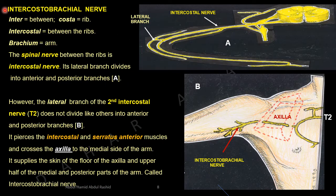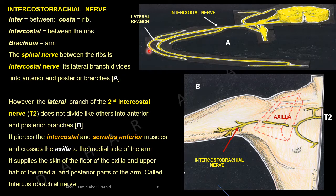Intercostal brachial nerve. 'Inter' means between, 'costa' means rib, so 'intercostal' means between the ribs, and 'brachial' means arm. The spinal nerve between the ribs is the intercostal nerve. Normally, the lateral branch of an intercostal nerve divides into anterior and posterior branches. However, the lateral branch of the second intercostal nerve, T2, does not follow this rule — it gives a lateral branch but does not divide into anterior and posterior branches like other intercostal nerves.